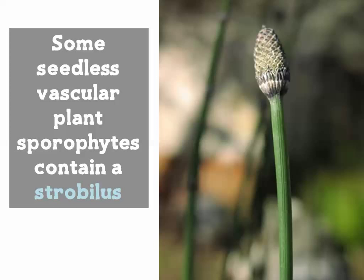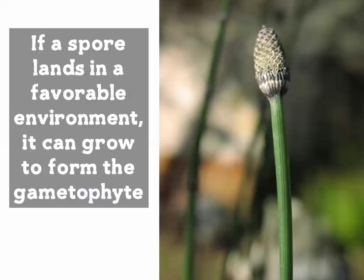One adaptation specific to seedless vascular plants is that they have structures called the strobilus. That's this pointy structure at the top of the stem — a compact cluster which contains structures that bear spores. These spores are often carried by the wind, and if they land in a favorable environment they can grow to form the gametophyte.